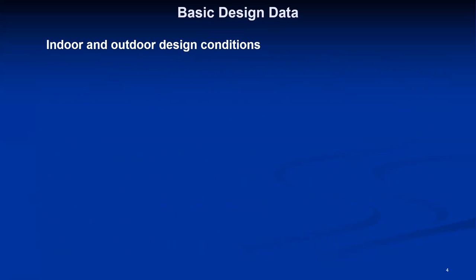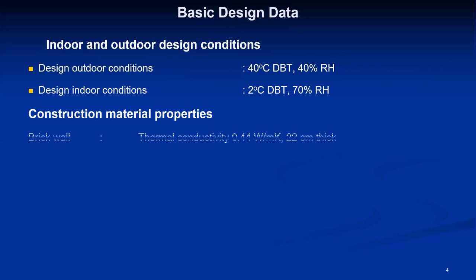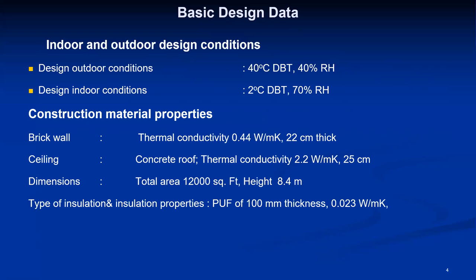The basic design data for this cold storage is given. Outdoor design conditions are considered as 40 degrees Celsius DBT and 40% RH. Indoor design conditions are based on the product to be stored. In this sample case, onion is the product, so the recommended indoor conditions are 2 degrees Celsius DBT and 70% RH. Construction material properties are given: a brick wall with thermal conductivity and thickness, and a concrete roof with its thermal conductivity and thickness. The total area available is 12,000 square feet and the recommended height is 8.4 meters.